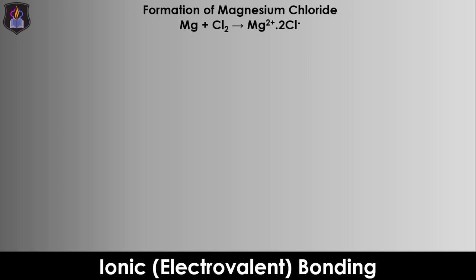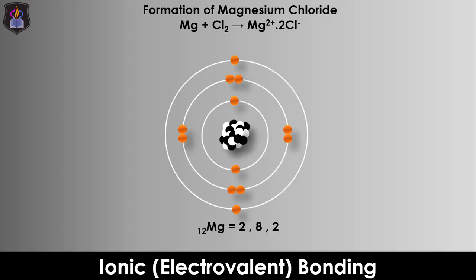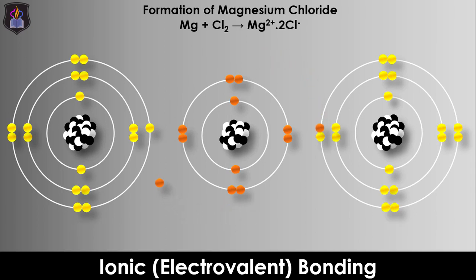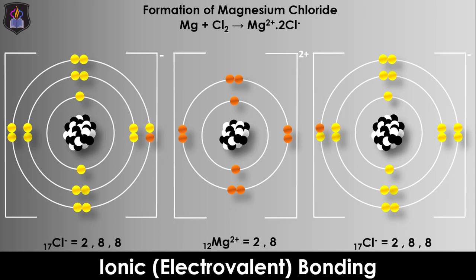In the formation of magnesium chloride, a divalent metallic atom combines with a univalent non-metallic atom to form a compound. Hence, 2 atoms of the non-metallic atom will be required. So, each of the 2 valence electrons of magnesium are donated to 2 different chlorine atoms to form magnesium chloride, an aggregate of magnesium and chloride ions, as seen on the screen.